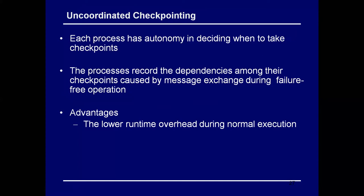Uncoordinated checkpointing means every process has autonomy — it independently decides when to take checkpoints based on previous failure rates or amount of task completed. Each process decides its own checkpoint frequency. There are two kinds of messages: application messages passed in normal computation, and control messages used for the checkpointing protocol itself. In uncoordinated checkpointing there are no control messages — only normal application messages — so processes must record the dependencies among checkpoints caused by message exchanges.